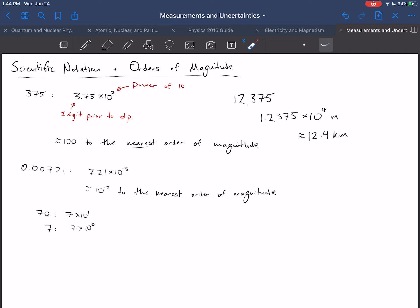Nearest power of 10. So in a number like this, 375, the nearest power of 10 is 100, or 10 to the 2. This value is closer to 10 to the 2 than it is to any other power of 10.